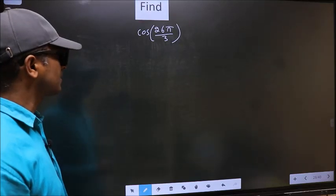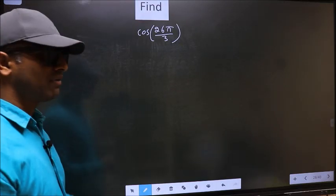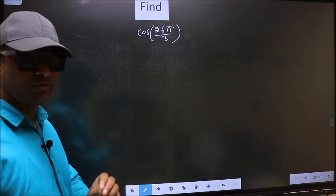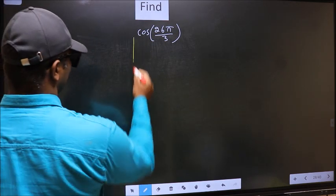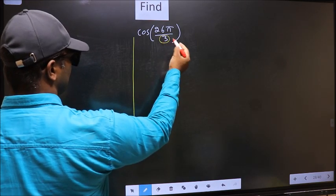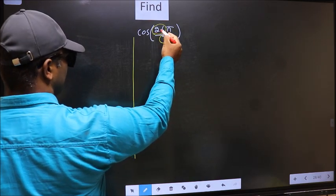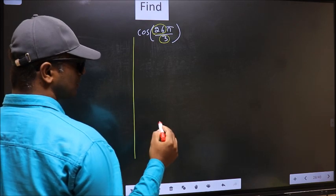Find cos 26π by 3. To find this, we should follow this method. In the denominator, we have 3. In the numerator, 26. Now you should check.